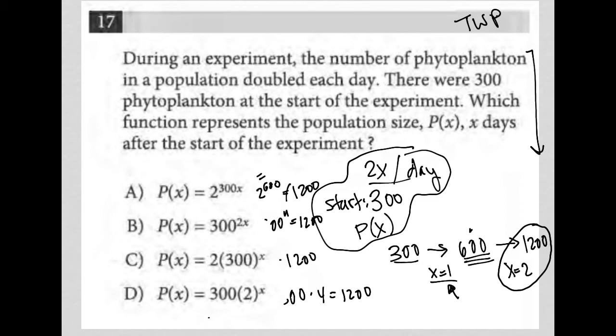We can always kind of plug our own number in. So in essence, I'm using the strategy plug in my own number. But I'm using this based upon what the question gave me. So I know that when x equals one, I should get to 600.